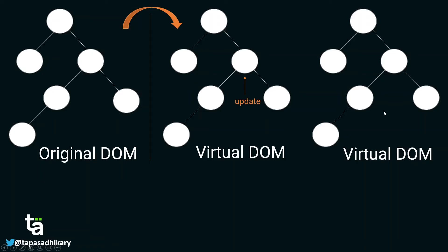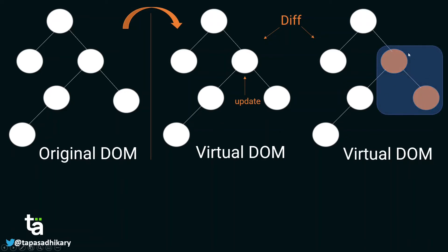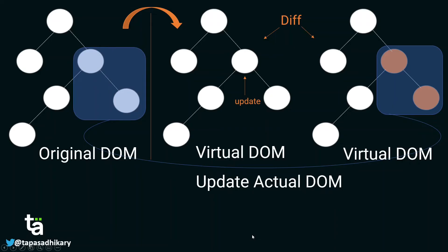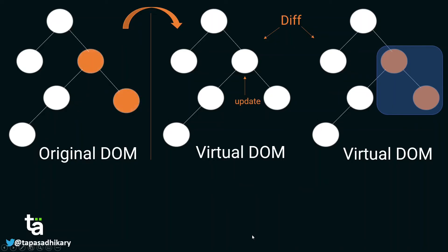Instead, React creates a new copy of the Virtual DOM with the changes applied. If a particular element changed, React marks that node and its subtree as changed in the new copy. React still hasn't updated the original Virtual DOM copy. Next, React performs a diff between the previous copy of the Virtual DOM and the current copy. The purpose of the diff is to identify exactly what changed. Once the diff identifies the changed subtree portion, React figures out that corresponding section in the original DOM and updates it.